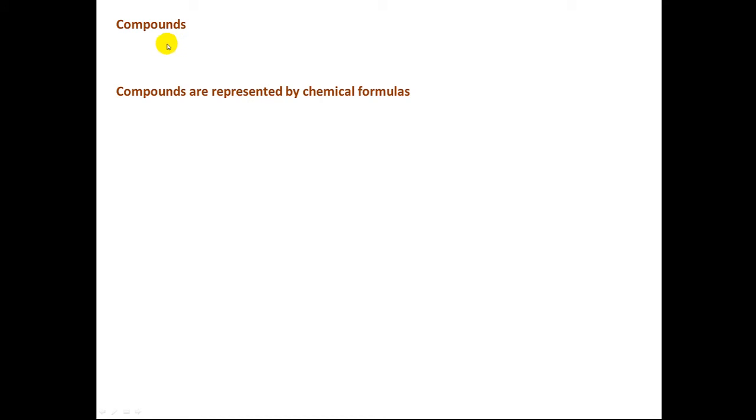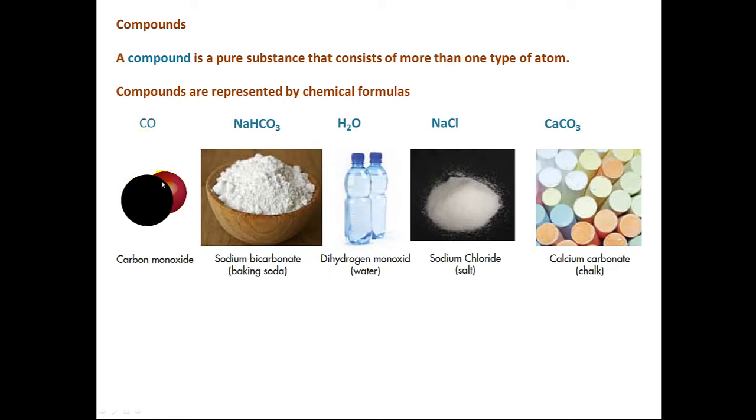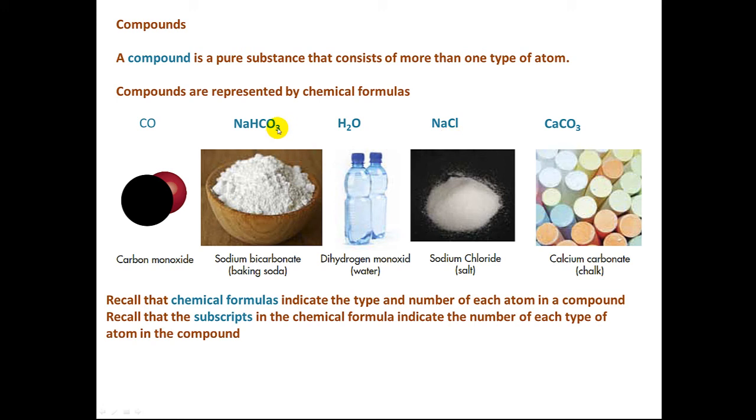Now let's talk about compounds. Compounds are represented by chemical formulas. A compound is defined as a pure substance that consists of more than one type of atom. For example, carbon monoxide, baking soda (also called sodium bicarbonate), water, sodium chloride (table salt), and calcium carbonate. And of course, there are many, many other compounds. Remember that the chemical formulas for a compound indicate the type and number of each atom in the compound. Recall that the subscripts in the chemical formula indicate the number of each type of atom in the compound. Where we don't see a subscript, we assume a one. For example, sodium bicarbonate, or baking soda, contains one sodium atom, one atom of hydrogen, one atom of carbon, and three oxygen atoms.